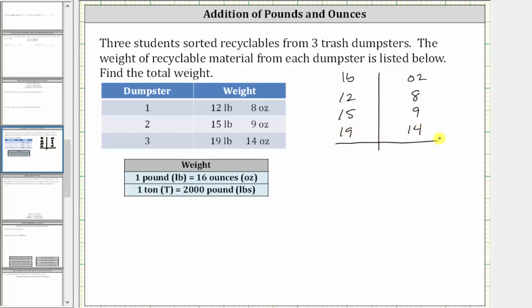Now let's go ahead and add the ounces and add the pounds. For the ounces, 8 plus 9 plus 14 is 31. We have 31 ounces. And for the pounds, we have 12 plus 15 plus 19, which is 46, giving us 46 pounds. So the total weight is 46 pounds and 31 ounces.